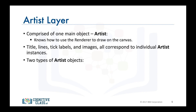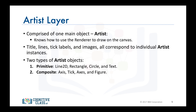There are two types of artist objects. The first type is the primitive type, such as a line, a rectangle, a circle, or text. The second type is the composite type, such as the figure or the axes. The top-level Matplotlib object that contains and manages all of the elements in a given graphic is the figure artist.